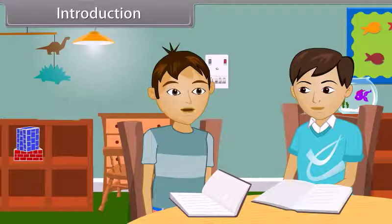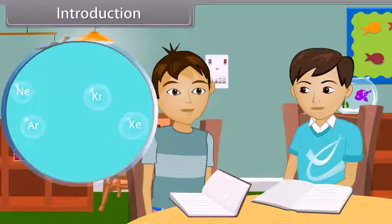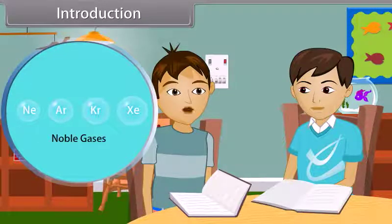Noble gases are present approximately 1% in air. And what are the names of these gases? Neon, Argon, Krypton and Xenon — all together known as noble gases.